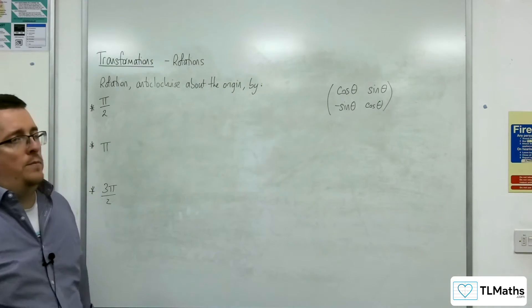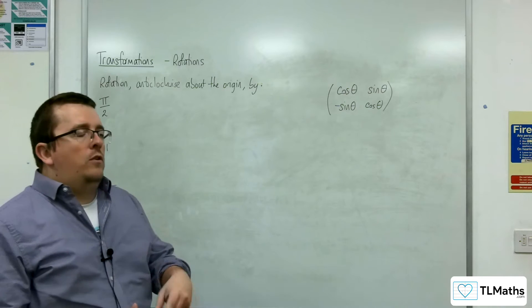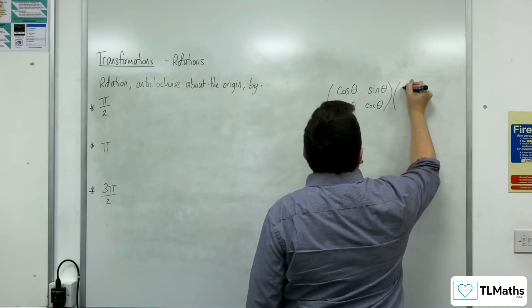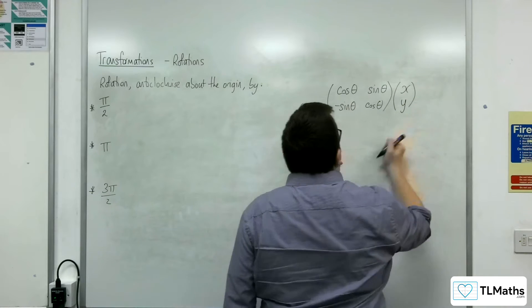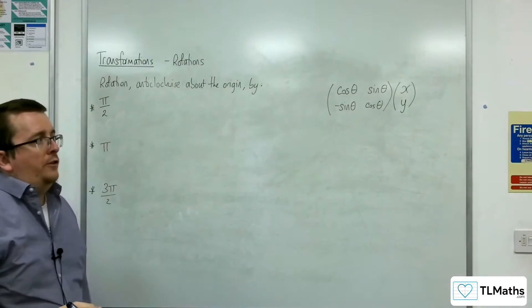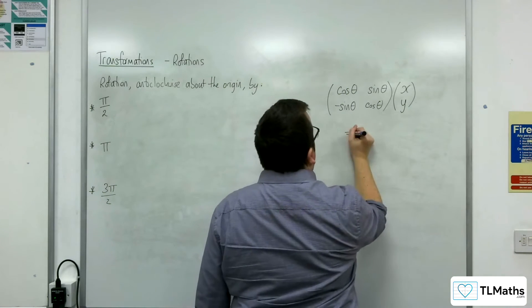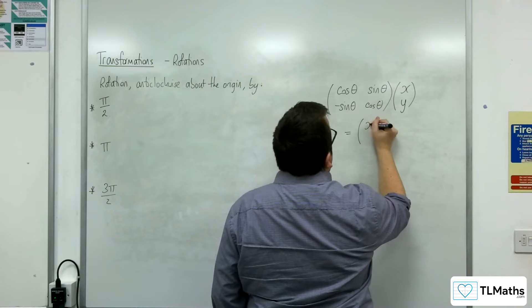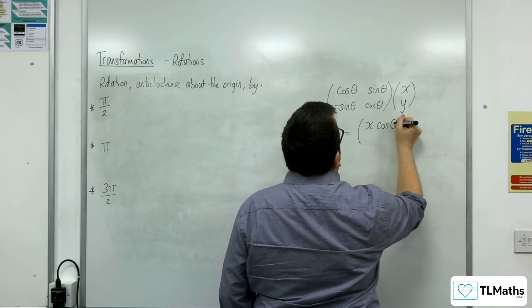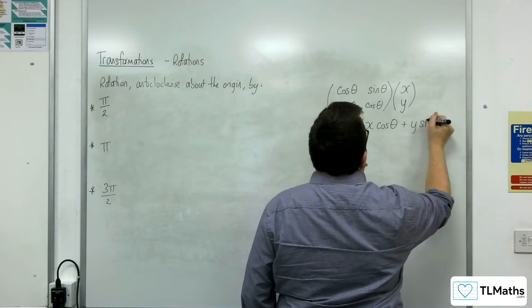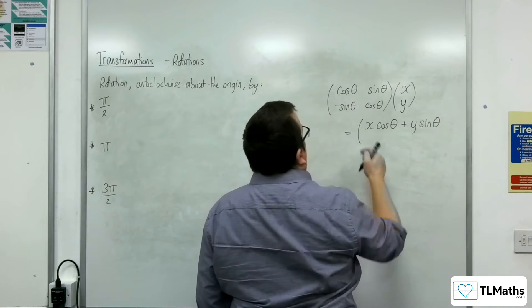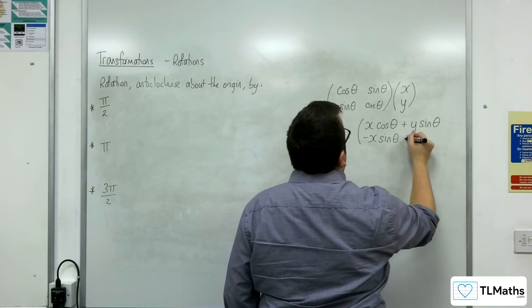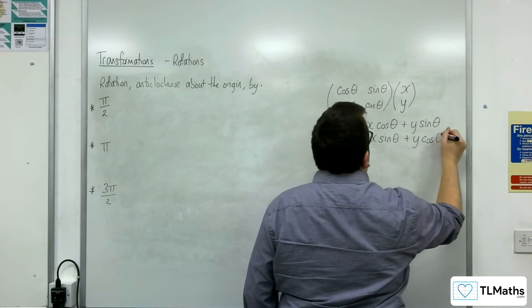So the idea would be, if I've got a general pair of coordinates x, y, and I apply this matrix to x, y, then what I would get is I would get x times cosine theta plus y sine theta, and minus sine theta times x, so minus x sine theta plus y cosine theta.